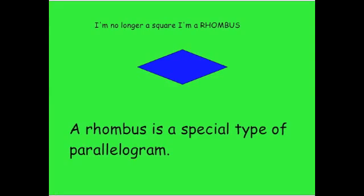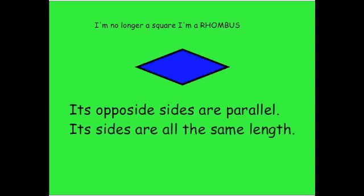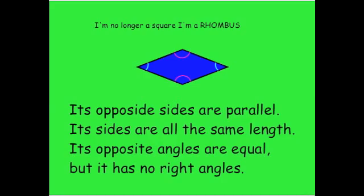A rhombus is a special type of parallelogram. Its opposite sides are parallel, its sides are all the same length, the opposite angles are equal, but it has no right angles.